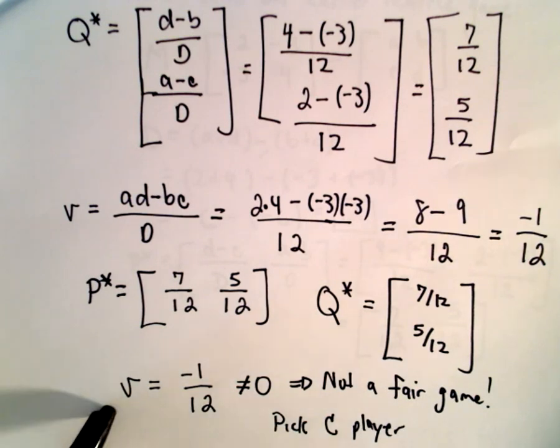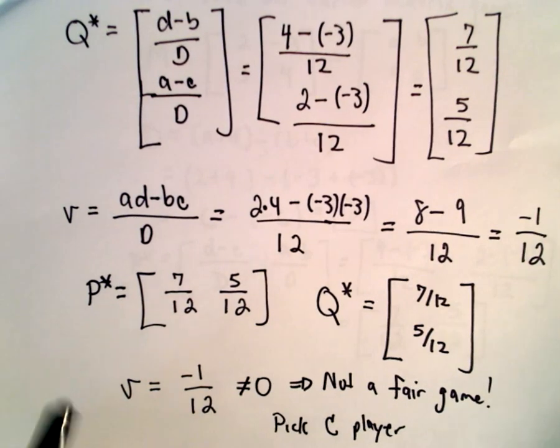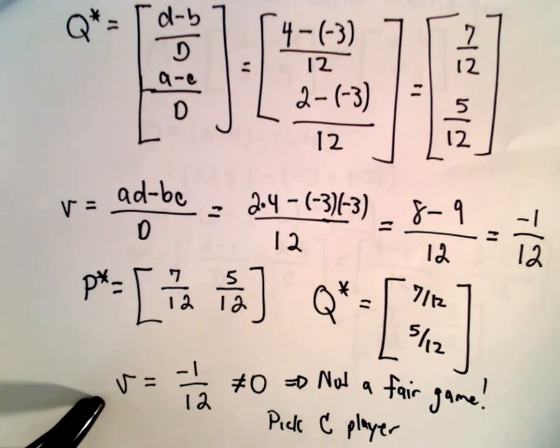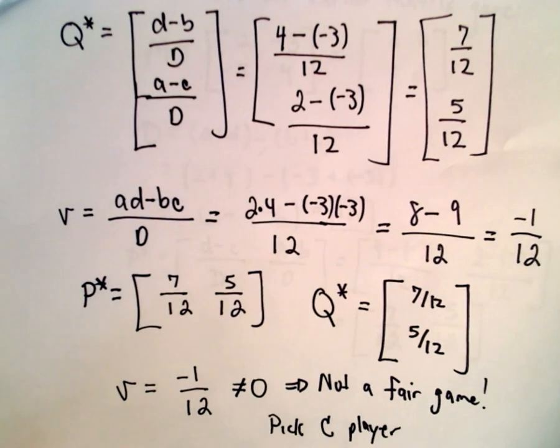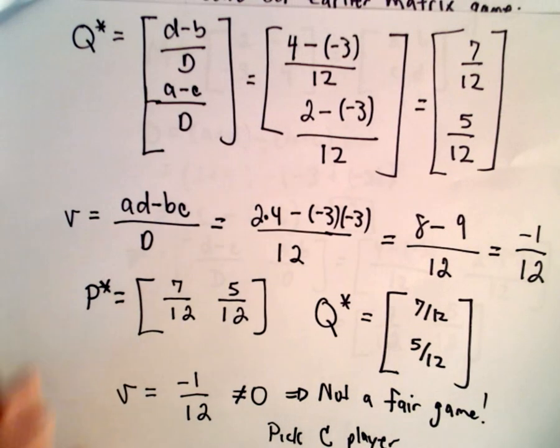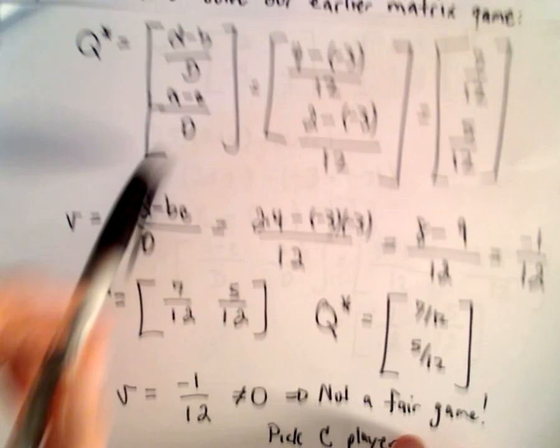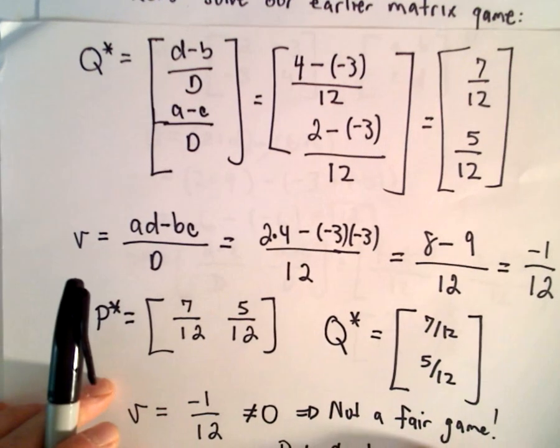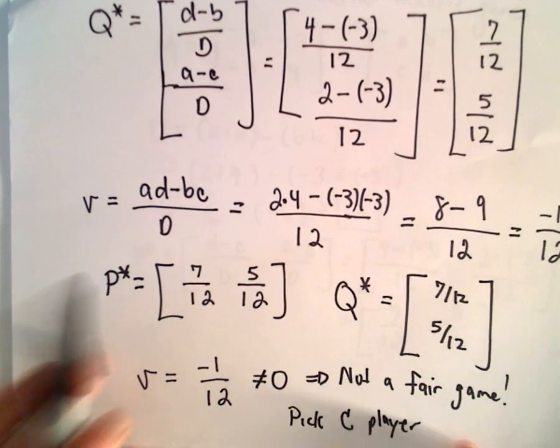So nothing too crazy here. Once you know the formula, it's just sort of grinding it down. In the next video, what I'm going to talk about will be known as recessive rows and columns. And what that is, it shows you how to take, in certain cases at least, how to take a higher-order matrix game and reduce it to a 2x2 matrix game so we can apply our same formulas.